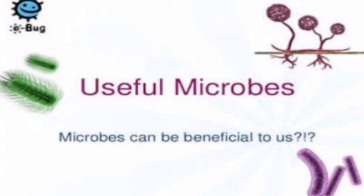Microorganisms in the soil: Root nodules of leguminous plants convert atmospheric nitrogen into its compounds. Due to them, soil fertility increases and the protein content of pulses also increases. Microbes produce milk products like curd, butter, buttermilk, cheese, paneer, etc. from milk. Processes like tanning of skin and production of ropes and strings from agave are done with the help of microbes.